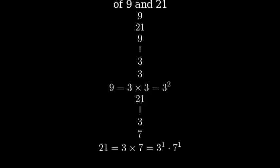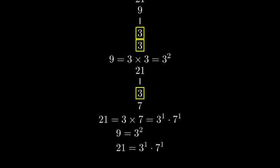Now that we have the prime factorizations, let's compare them. We can see that 3 is the only prime factor that 9 and 21 have in common. 9 has 3 squared, while 21 has 3 to the first power times 7.